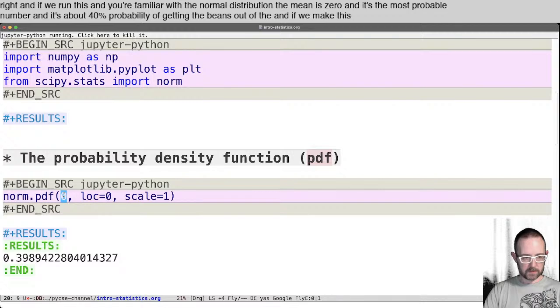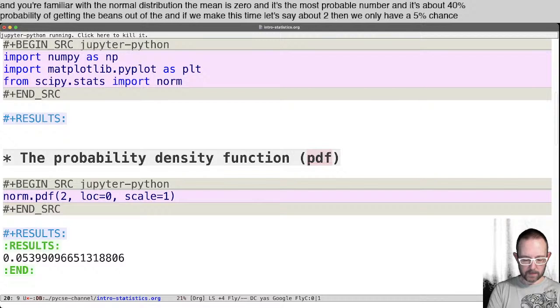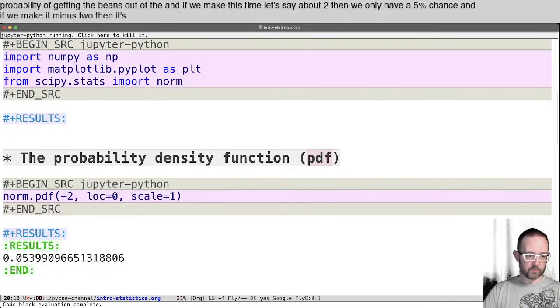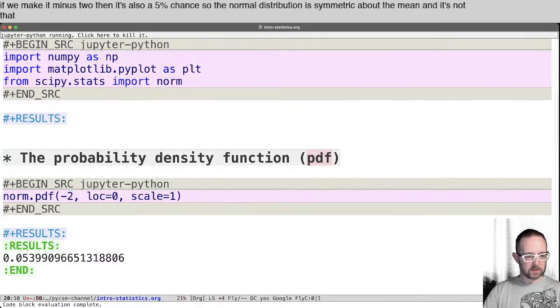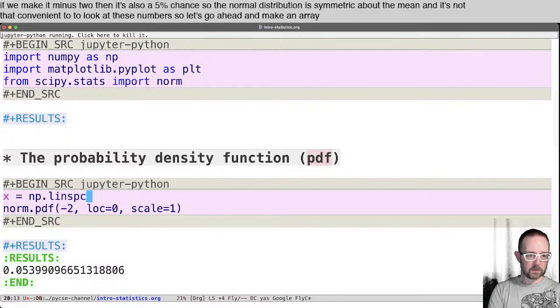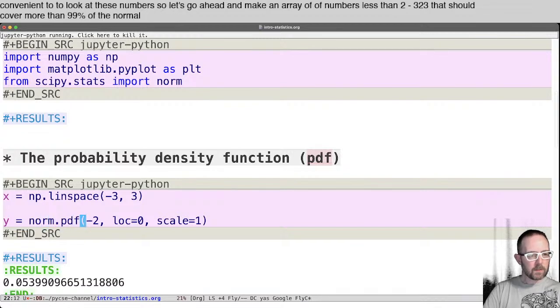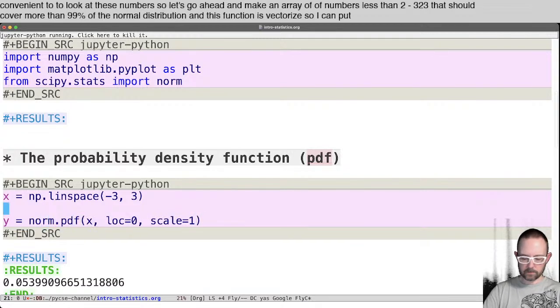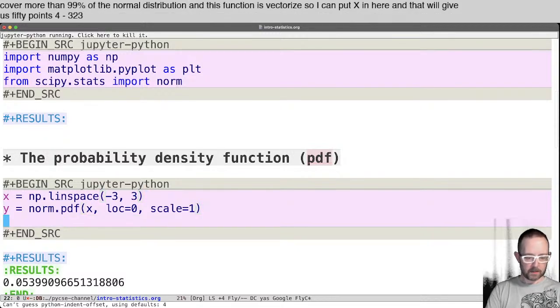And if we make this, let's say, about two, then we only have a five percent chance, and if we make it minus two, then it's also a five percent chance. So the normal distribution is symmetric about the mean, and it's not that convenient to look at these numbers. So let's go ahead and make an array of numbers. Let's do minus three to three. That should cover more than 99 percent of the normal distribution. And this function is vectorized, so I can put X in here, and that will give us 50 points from minus three to three. And now let's go ahead and plot them.